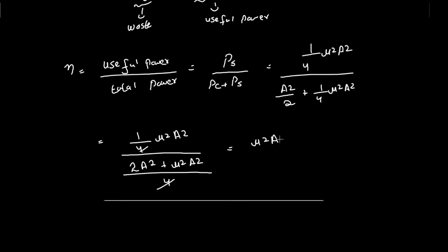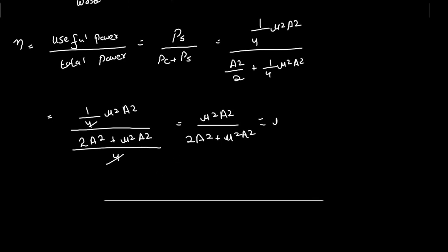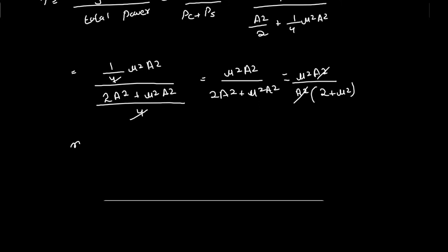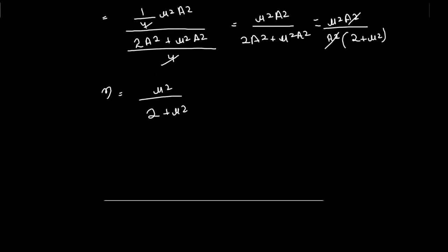Simplifying, we multiply numerator and denominator by 4, giving μ²A² divided by (2A² + μ²A²). Taking A² common and cancelling, we get μ² divided by (2 + μ²). So in the case of tone modulation, the efficiency is equal to μ²/(2 + μ²). This is equation B, the efficiency of the amplitude modulated signal.